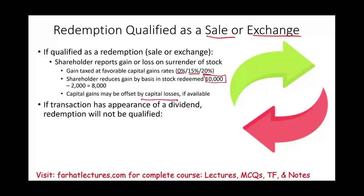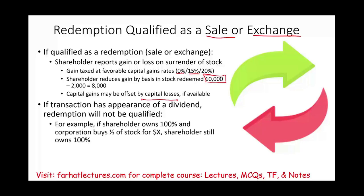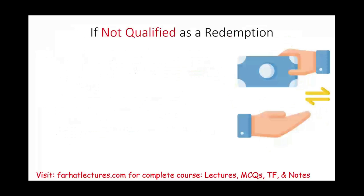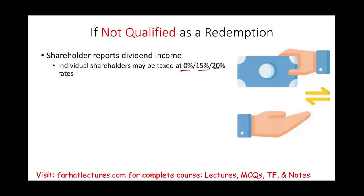If the transaction appears as a dividend, it means the shareholder owns 100% and the corporation buys half of the stock — the shareholder still owns the stock, so it's classified as a dividend. If not classified as a redemption, the shareholder would report dividend income. Dividends are taxed at 0, 15, and 20%.